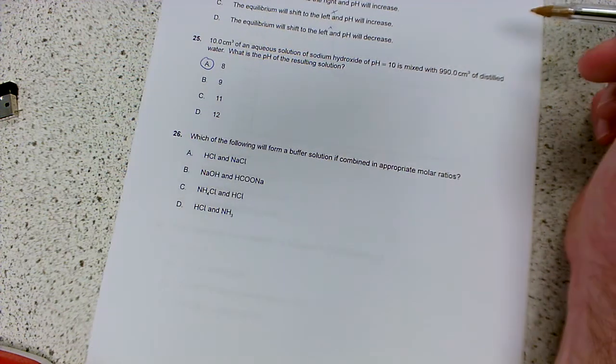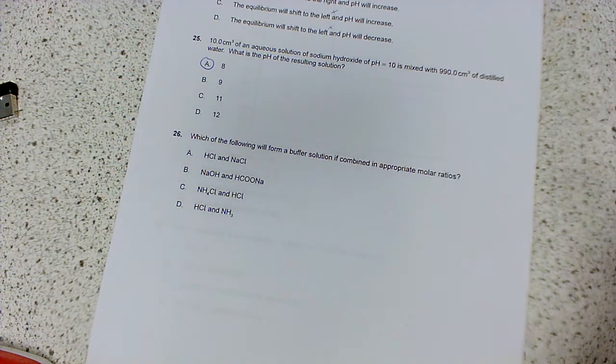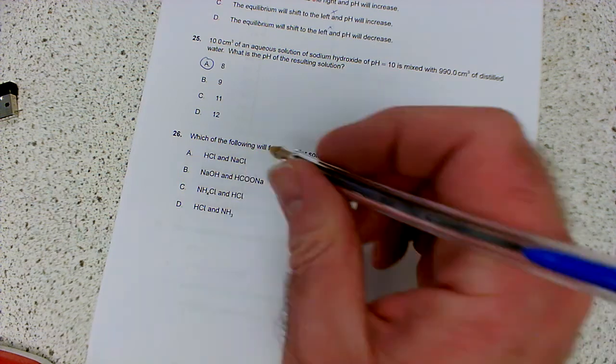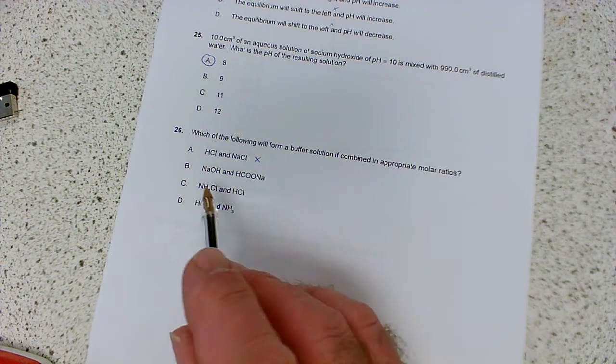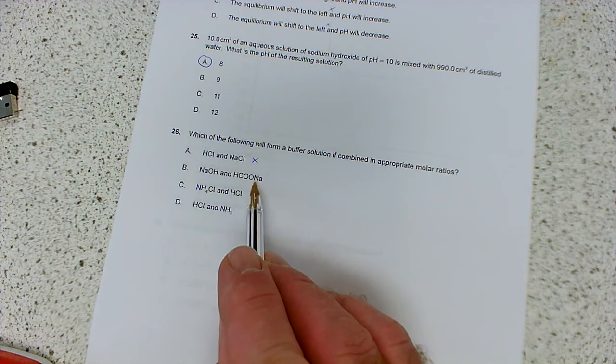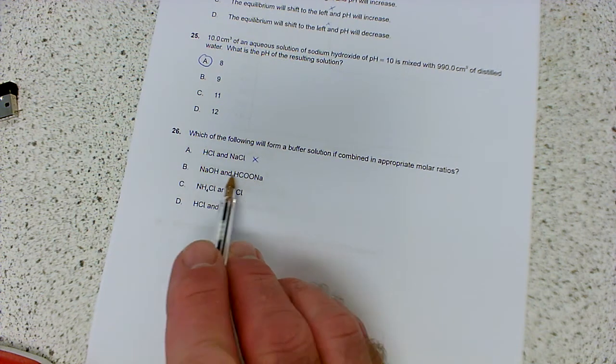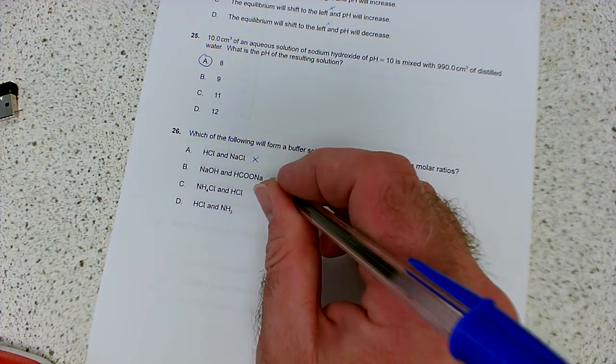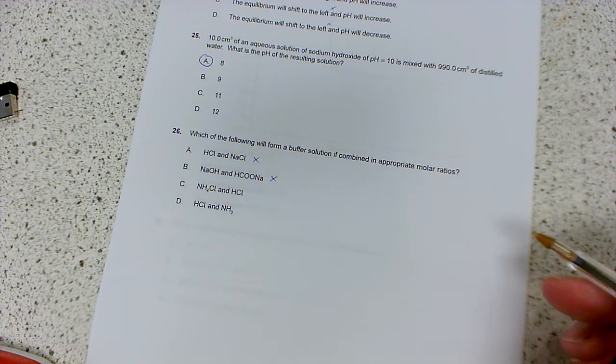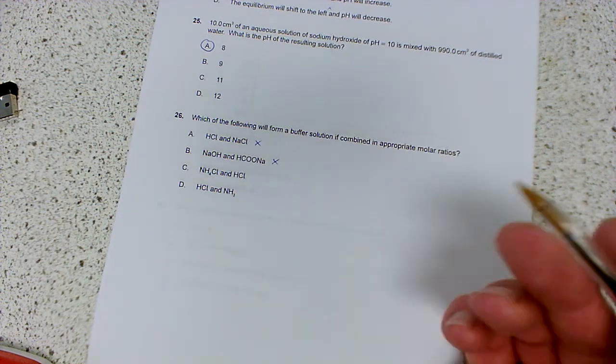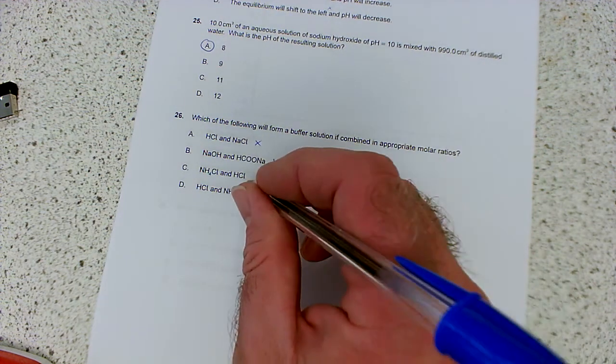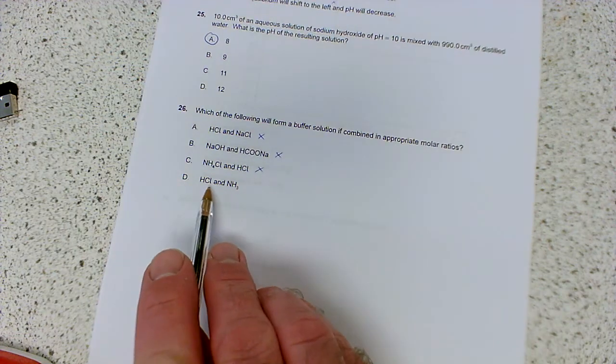Which of the following will form a buffer solution if combined in appropriate molar ratios? Well, HCl and sodium chloride won't do anything. You'll just have a solution of acid at the end of it. Sodium chloride's not an acid or a base. Sodium hydroxide and sodium ethanoate. Well, you've got two bases there. So again, that's not really going to work. You're just going to have like a basic solution. Ammonium chloride and HCl. Here we've got the opposite problem. We've got two acids. We've just got two proton donors. So that's not going to help.